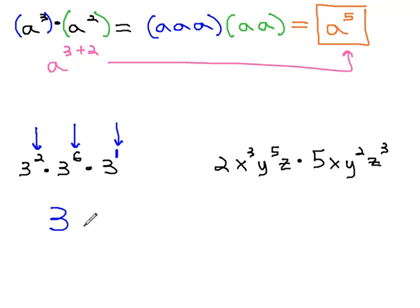To find out how many 3's there are total, we simply have to add the exponents. 2 plus 6 plus 1 is 9. This is equivalent of 3 to the ninth power.